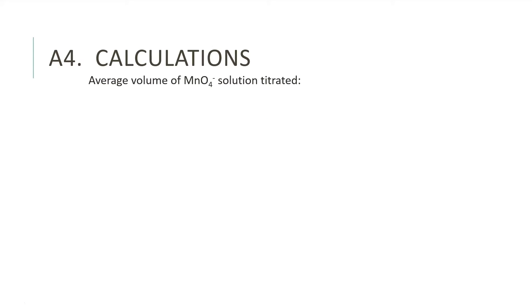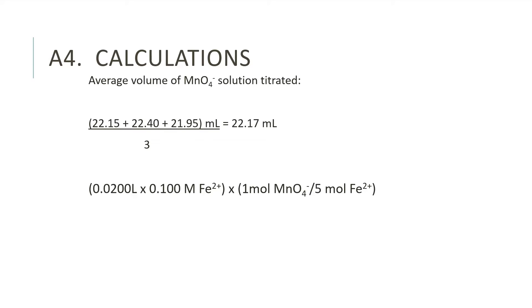A4: Calculations. This slide shows the calculations for the lab. The first calculation is finding the average volume of permanganate solution needed to titrate the iron 2+ solution. The second equation is the calculation to find the molarity of the permanganate solution.